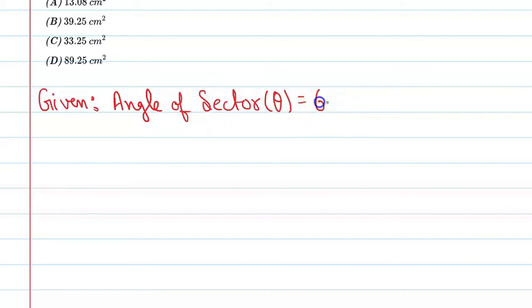Let's start. Theta equal to 60 degrees. Radius of sector, that is small r, equal to 5 centimeters.